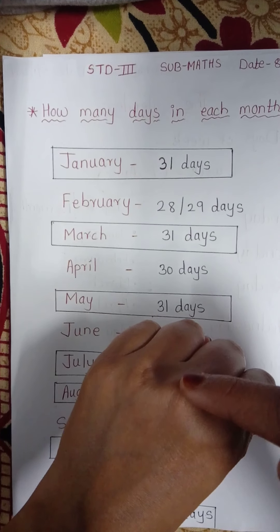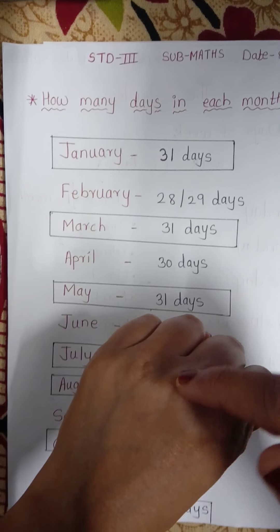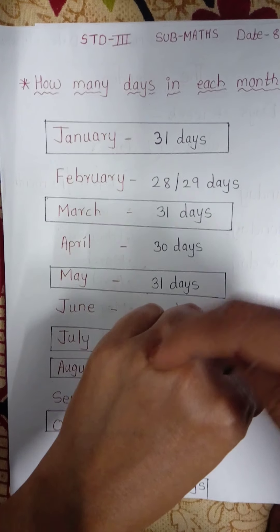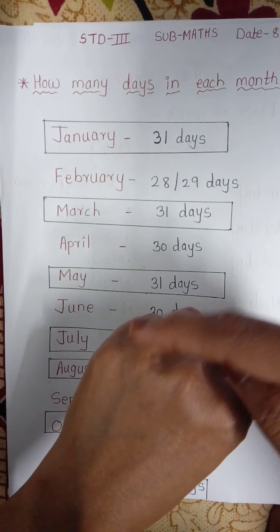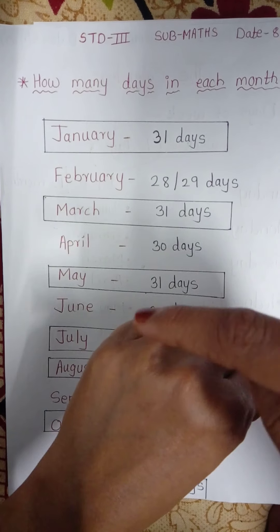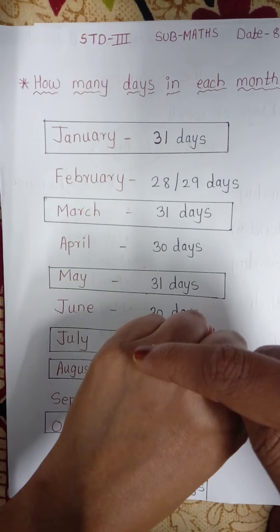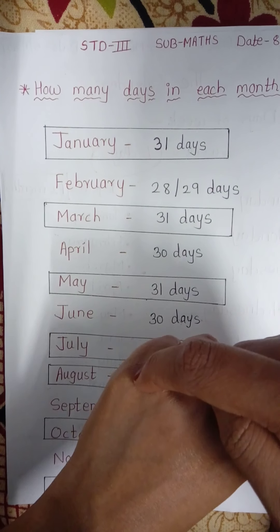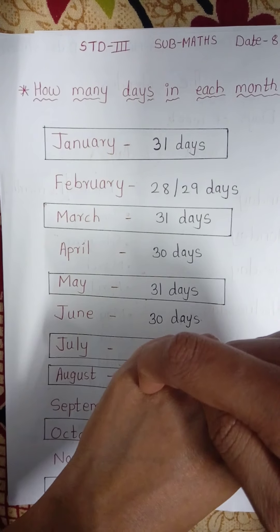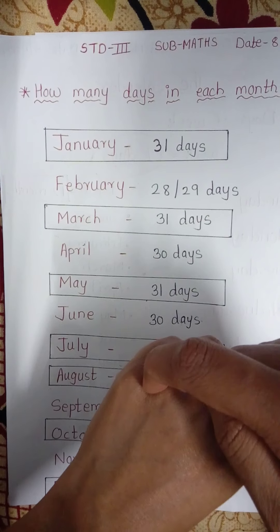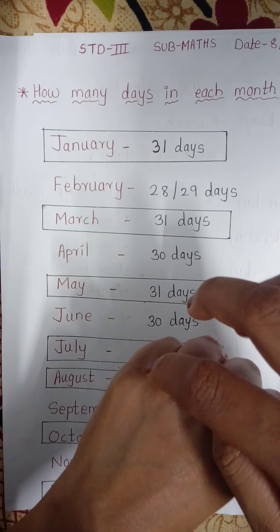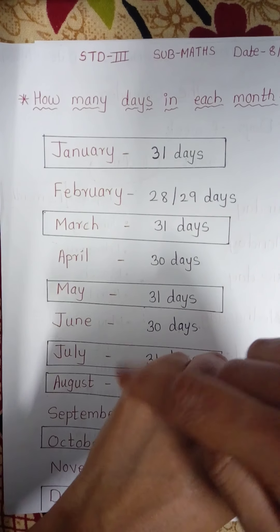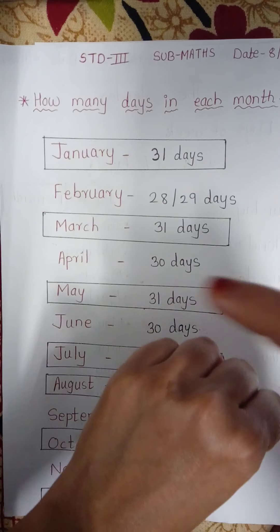In January, how many days? 31. Then April — 30. Why? Because April is low. Then after that, May is up, so May is 30 days. Then June is 30 days. Then July is 31 days.